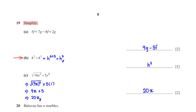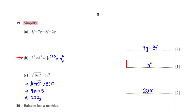Simplify h² × h⁵. Since the terms have the same base and are multiplying, we add their powers: h^(2+5) = h⁷.